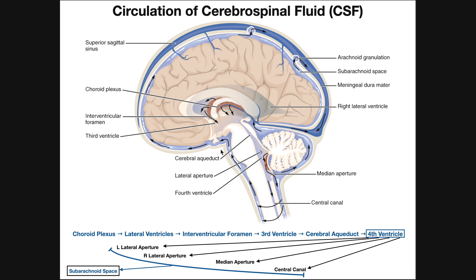You can see all the subarachnoid space here in light blue — going down through the spinal cord and posterior around the cerebellum. This is the main area where cerebrospinal fluid circulates. It protects the brain by providing a shock absorber and cushioning effect in cases such as blunt force trauma, while also allowing drainage of waste and some nutrient delivery.